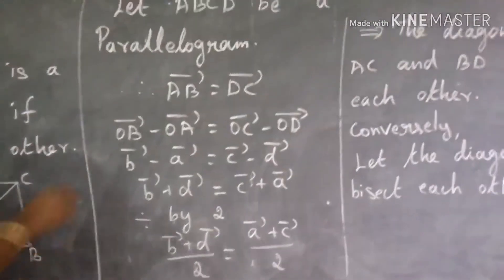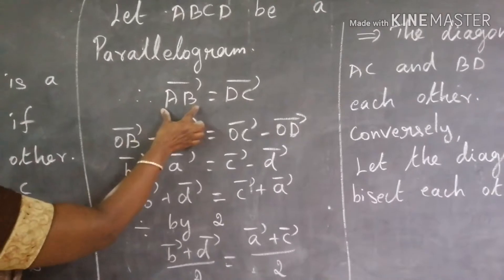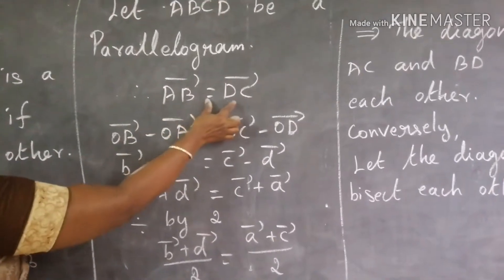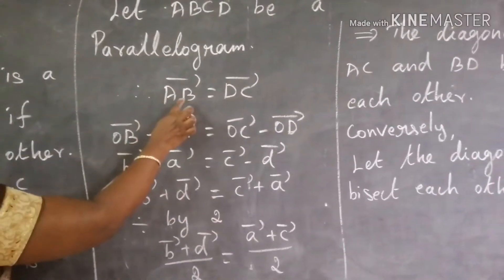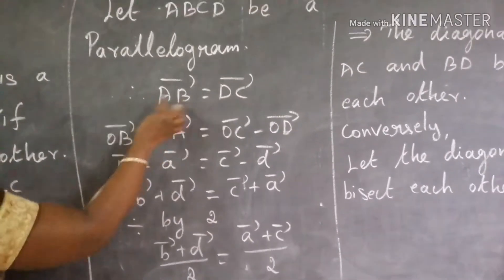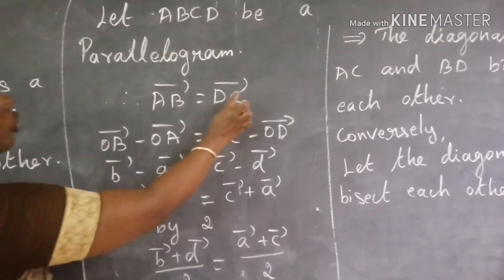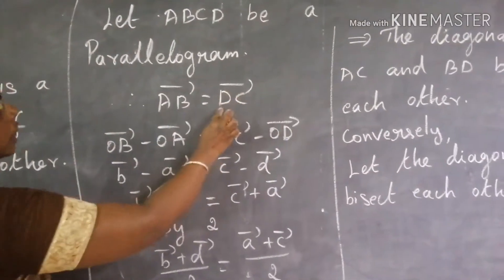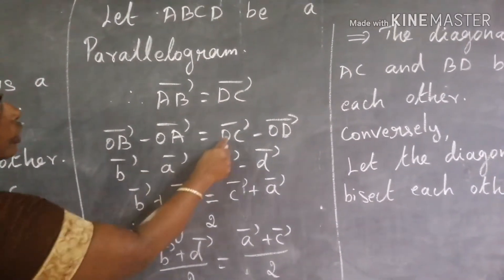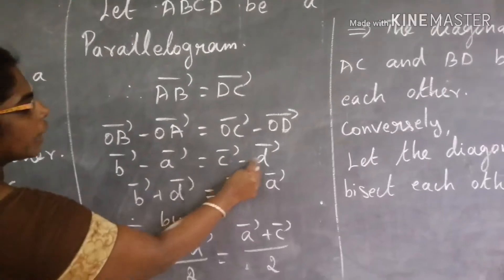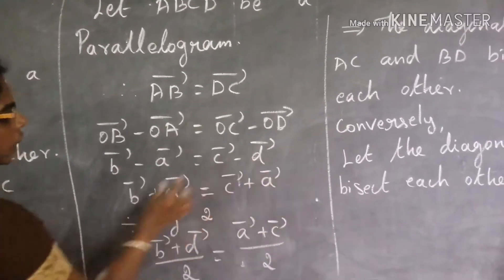Since ABCD is a parallelogram, AB is equal to DC. Using position vectors, OB minus OA equals OC minus OD, which gives us the relationship between the midpoints of the diagonals AC and BD.